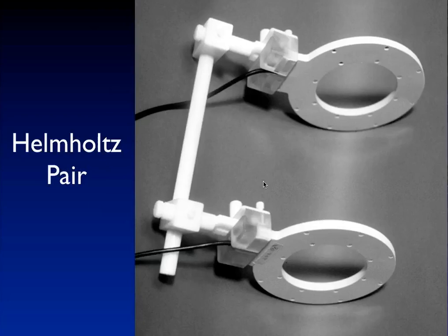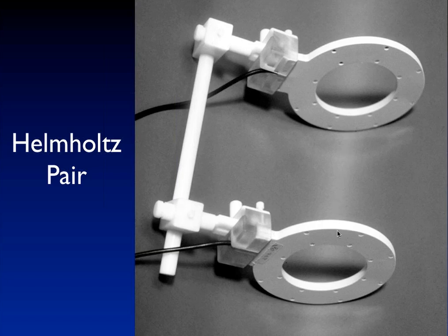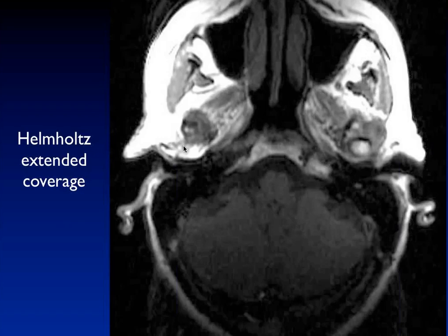A Helmholtz pair consists of two parallel loop coils. As described, you get more uniform signal intensity in the middle when they're spaced at about 1.3 times the radius of the coil. For many years this configuration was used for TMJ imaging to cover both joints simultaneously. Here's an example showing somewhat more uniform signal in the middle, though you still get brighter signal intensity adjacent to the two coils on either side of the hip.